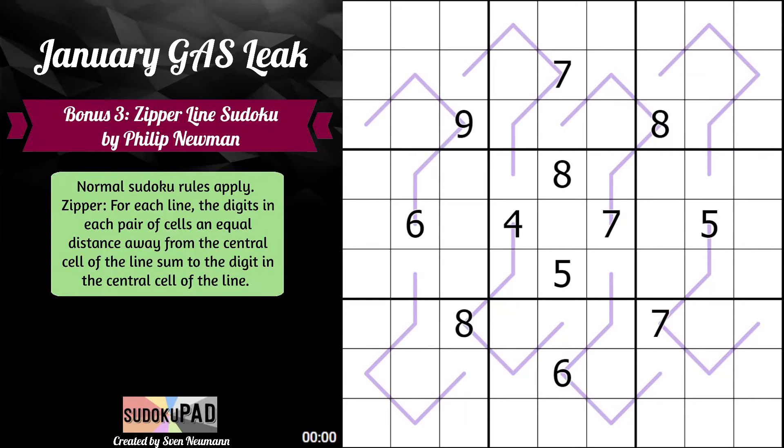Hello and welcome back to the January gas leak. This is bonus puzzle number three. It's called Zipper Line Sudoku by Philip Newman.